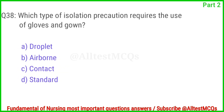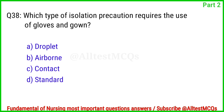Question No. 38. Which type of isolation precaution requires the use of gloves and gown? The correct answer is Option C: Contact.